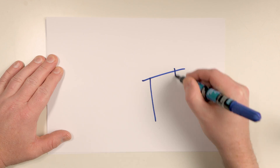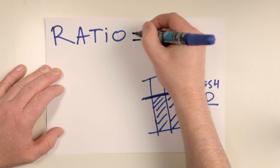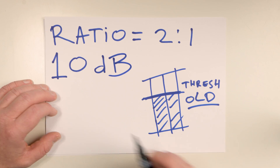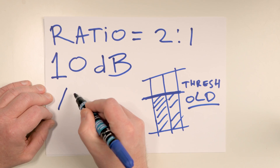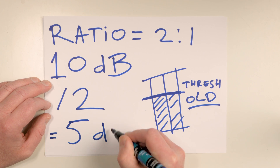A limiter is a compressor, so it compresses the audio above a certain threshold with a ratio. For instance with a ratio of 2 to 1, when you have 10 decibels above the threshold, this will be reduced by a factor of 2, so it will be 5 decibels.